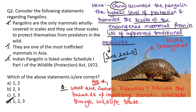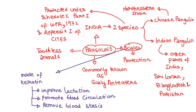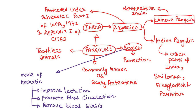India is home to two species of pangolin. The first is known as the Chinese pangolin and the second is known as the Indian pangolin. Chinese pangolins are found in northeastern India, and Indian pangolins are found in other parts of India and also in Sri Lanka, Bangladesh, and Pakistan.